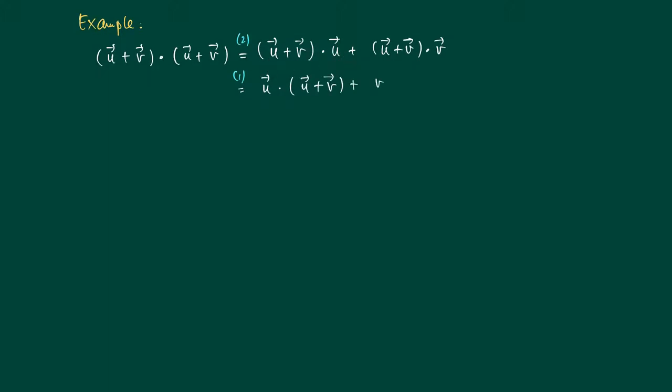Now again we apply the distributivity property, so we get u·u plus u·v, the dot product of u and v, and here we get v·u and v·v.